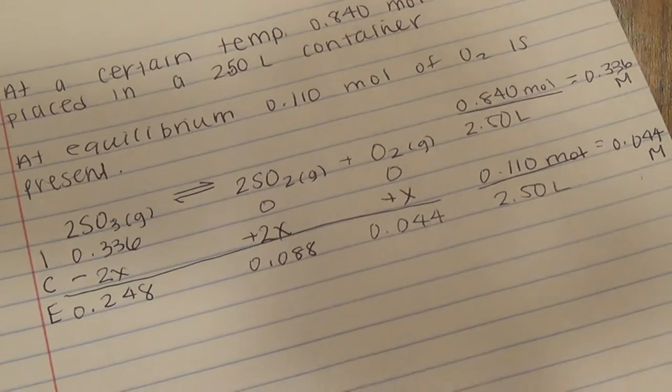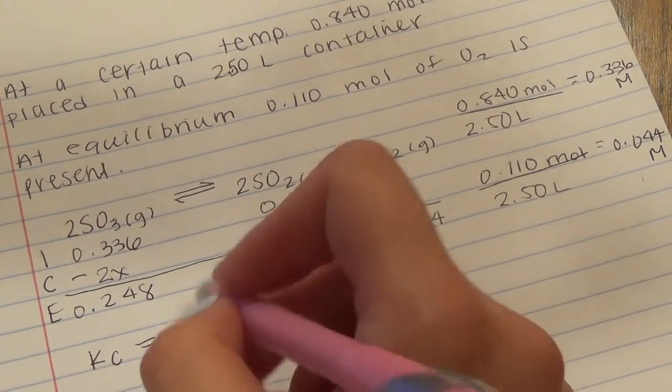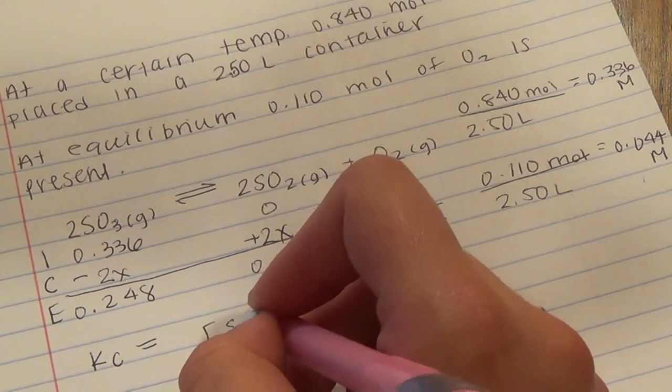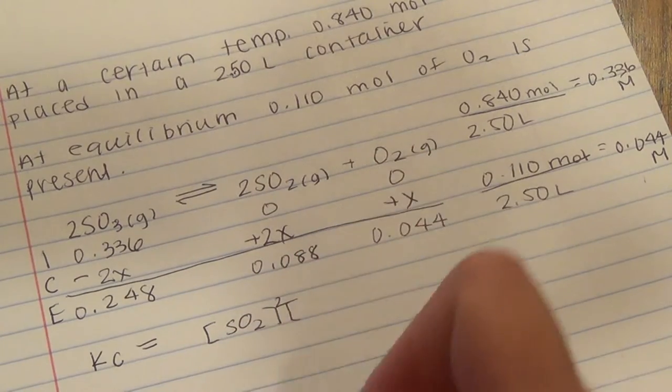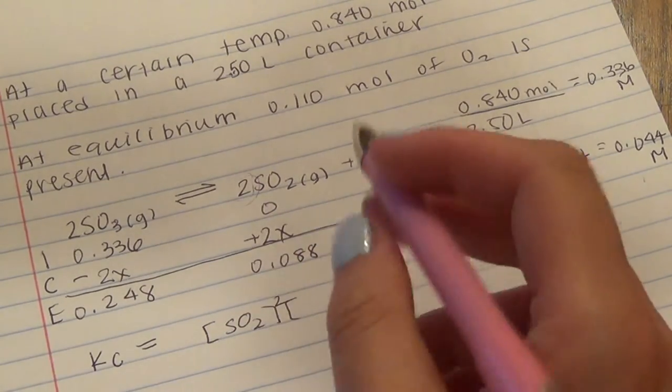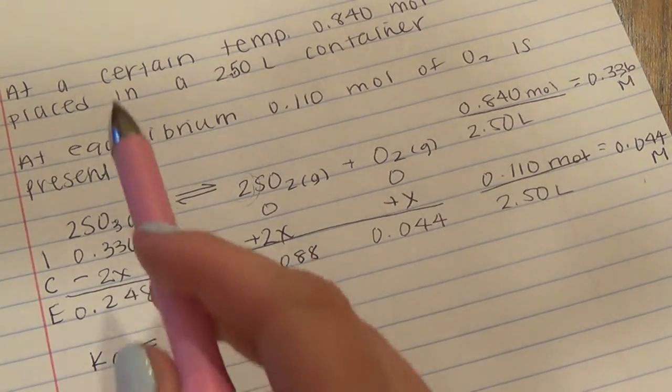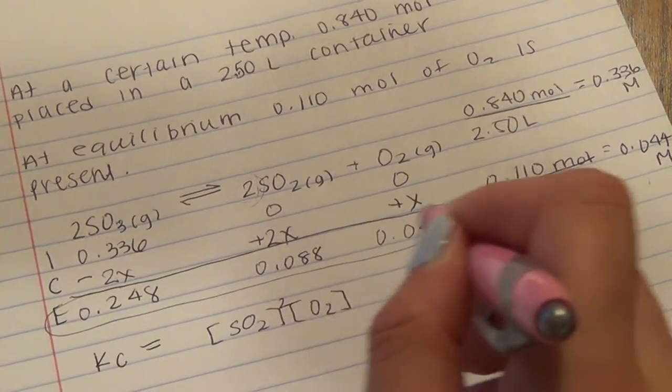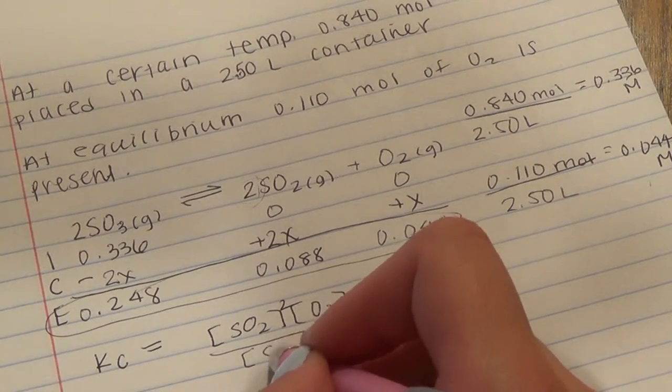And to find Kc, we take the concentration of SO2 times the concentration—this is squared because of this coefficient—and then the concentration of O2. And this is all the equilibrium concentration, so we're using these values. And then divided by the concentration of SO3, and that is also squared because of the coefficient in front of it.